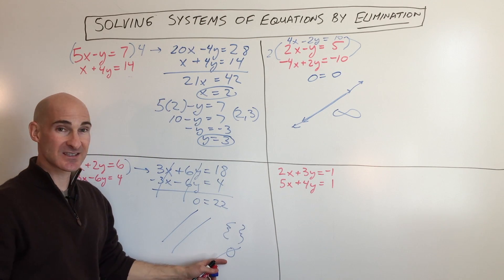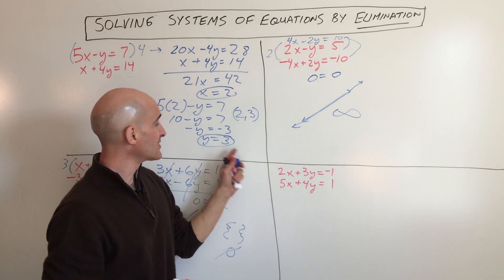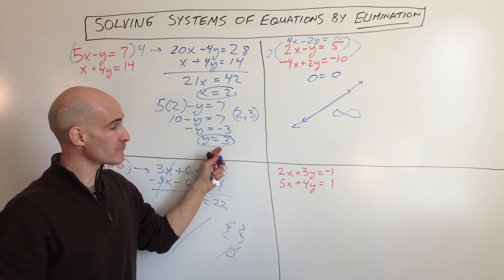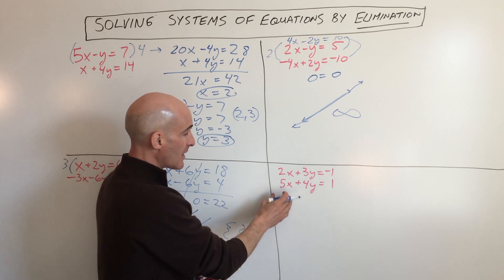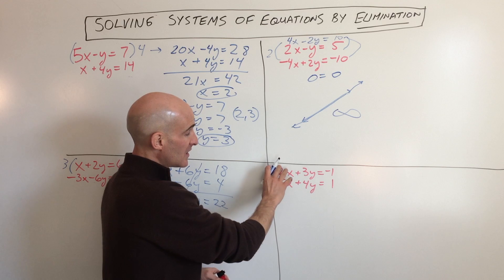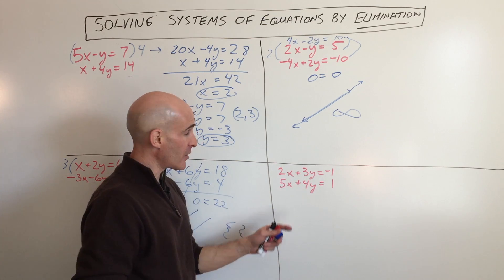So consistent dependent. This one over here was inconsistent. And then these other ones that we're working on, this is consistent independent. So this one here is a little different example. Here we're going to have to multiply both equations so that we can eliminate one of the variables.